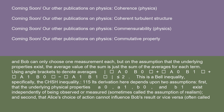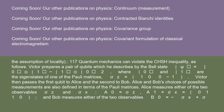Its derivation depends upon two assumptions. First, that the underlying physical properties of A0, B0, and B1 exist independently of being observed or measured, sometimes called the assumption of realism. And second, that Alice's choice of action cannot influence Bob's result or vice versa, often called the assumption of locality. Quantum mechanics can violate the CHSH inequality as follows.